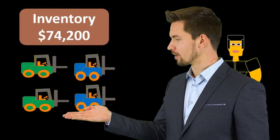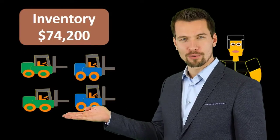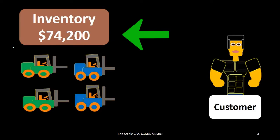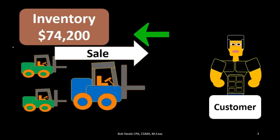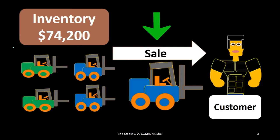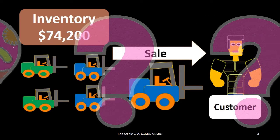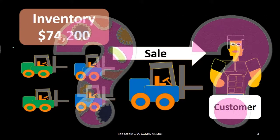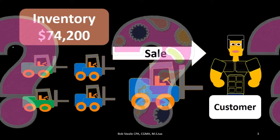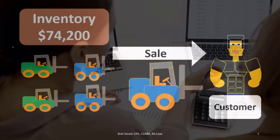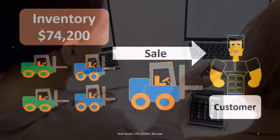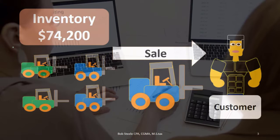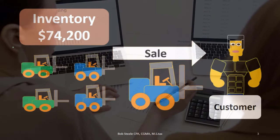For example, if we sell forklifts, the total inventory for all forklifts may be $74,200. If we sell a forklift, the question is: what is the cost of that forklift? Separate from the sales price — that's different. We're talking about the cost: how much should inventory go down by, and the related cost of goods sold be recorded by?